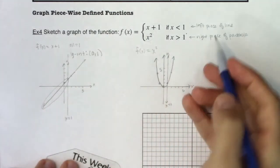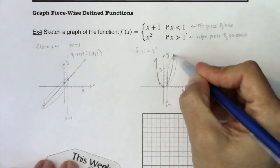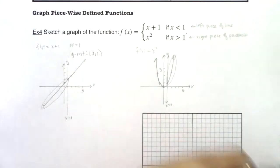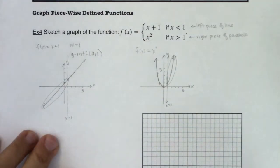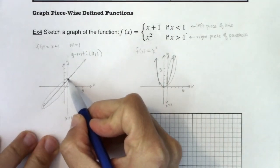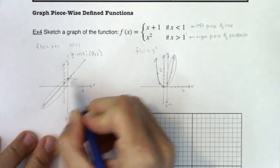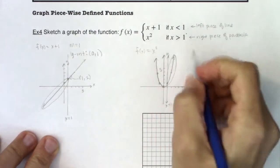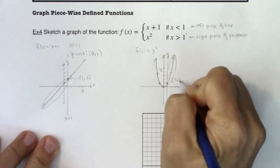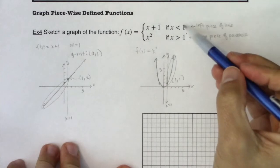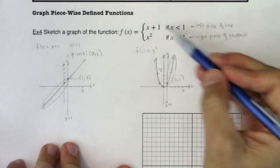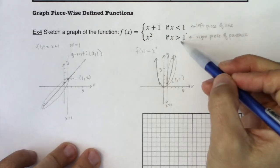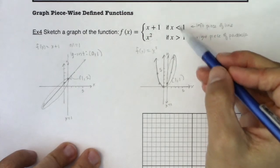It's always a good idea to figure out the function value at the breaking point. If I plug 1 into x plus 1, I get 1 plus 1 equals 2 — so the ordered pair is 1, 2. If I plug 1 into x squared, 1 squared is 1 — so the ordered pair is 1, 1. Note that the domain has no equals sign anywhere: it's strictly less than 1 and strictly greater than 1, so I'll be using open dots. Nothing is closed in.